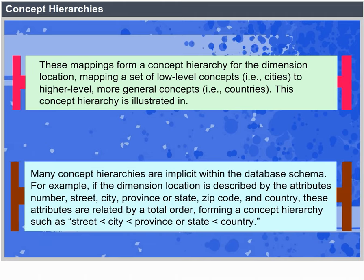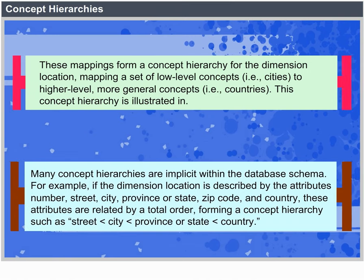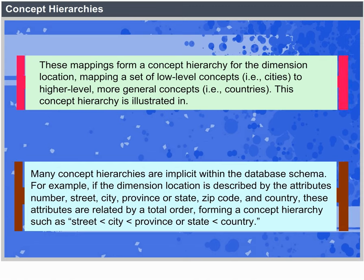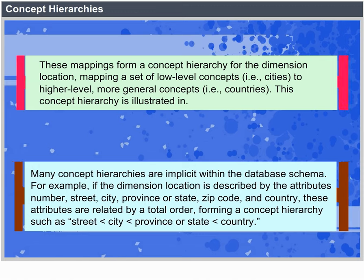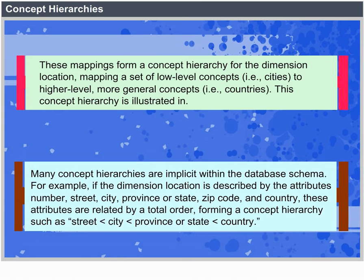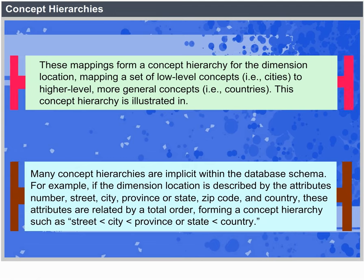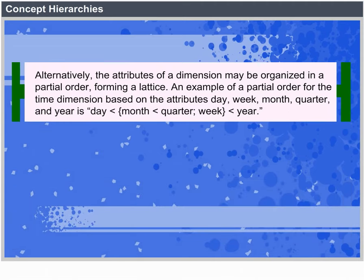Many concept hierarchies are implicit within the database schema. For example, suppose the dimension location is described by the attributes number, street, city, province or state, zip code and country. These attributes are related by a total order forming a concept hierarchy such as street, which belongs to city, which belongs to province or state, which belongs to country. Alternatively, the attributes of a dimension may be organized in a partial order forming a lattice.